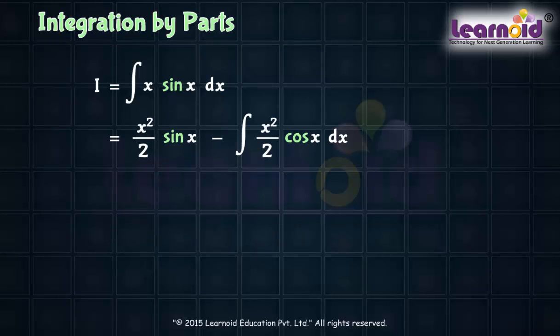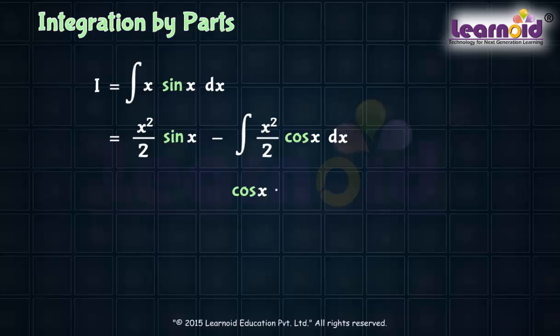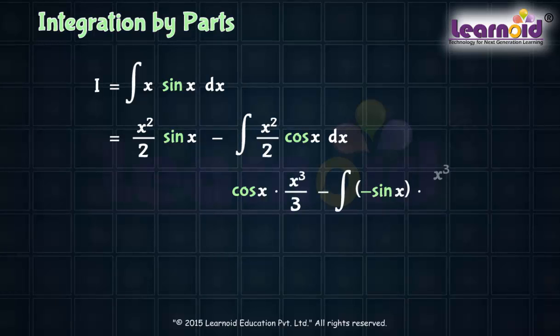After applying integration by parts formula once, we end up getting more difficult integration of product of x squared by 2 and cos x. If we apply integration by parts again on second term assuming cos x as first function and x squared as second function, it will end up in giving x cubed into sin x term for further integration. This will continue forever and we will never get integral solved due to wrong selection of first and second function.